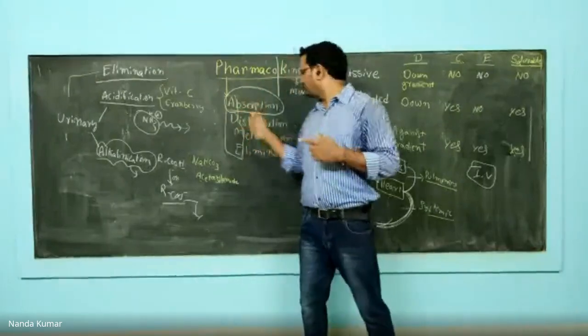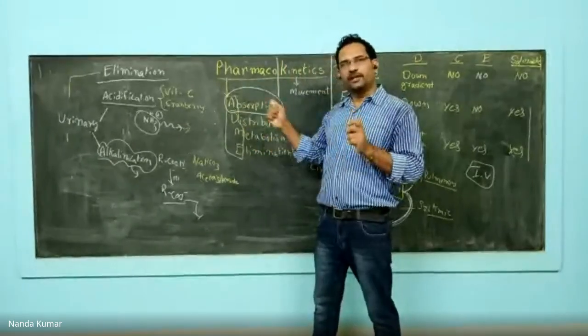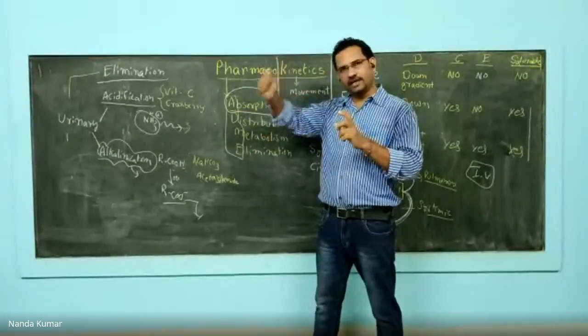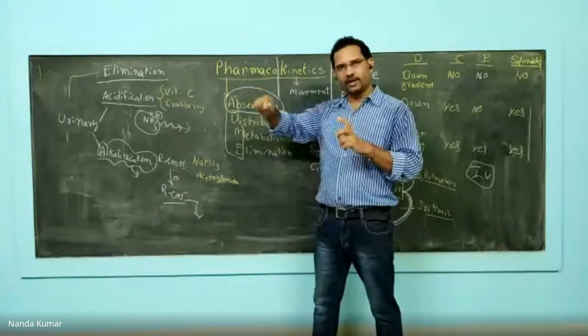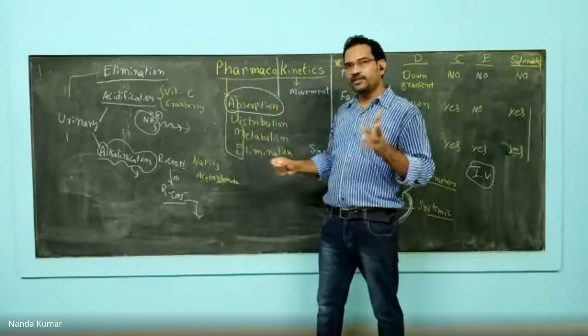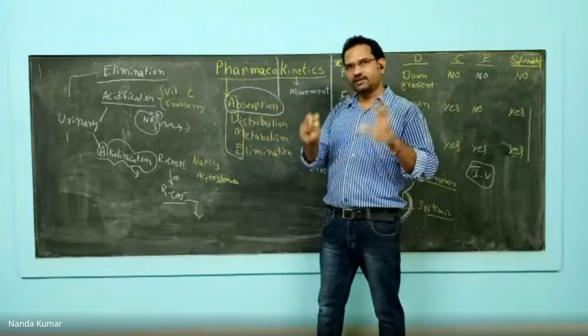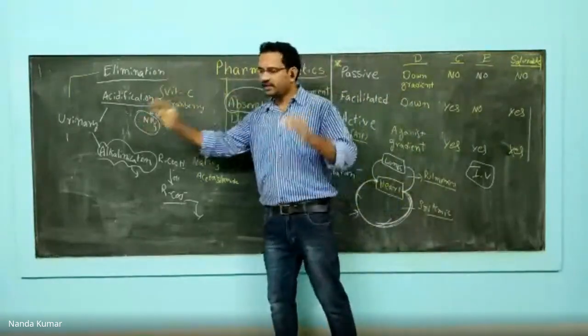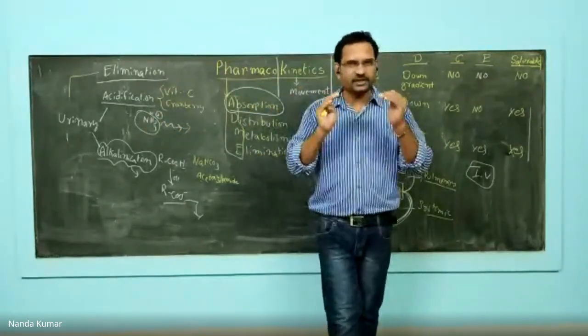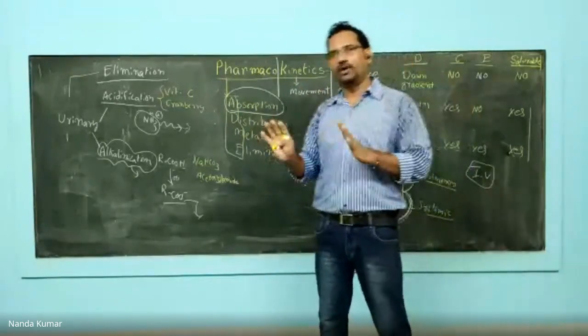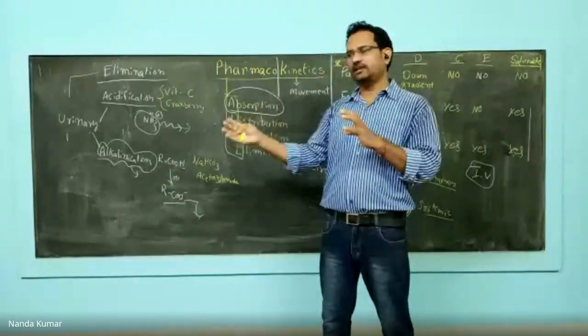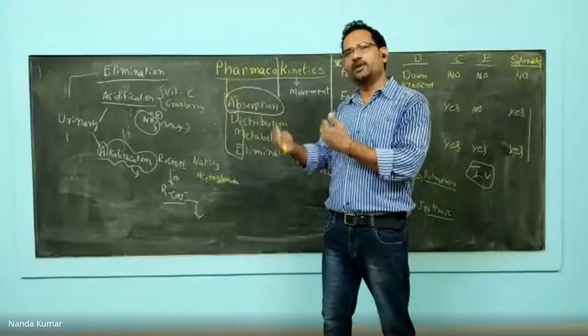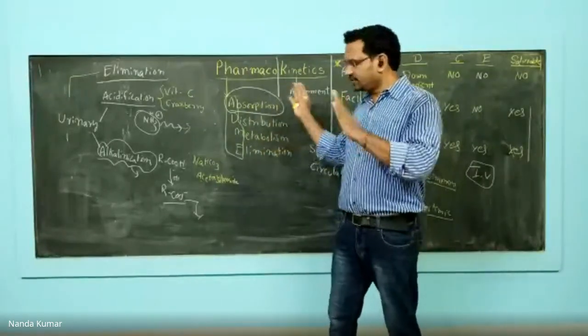Metabolism increases hydrophilicity so that the drug will be excreted, whereas reabsorption is hindered because in phase two large groups are added, leading to elimination. Again, the major route of elimination is kidney through water elimination. Metabolism will convert all the molecules. This is about elimination.